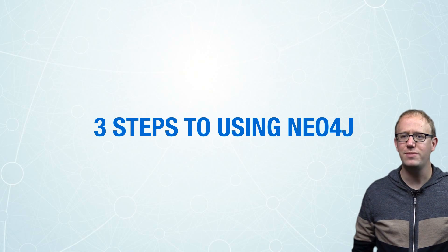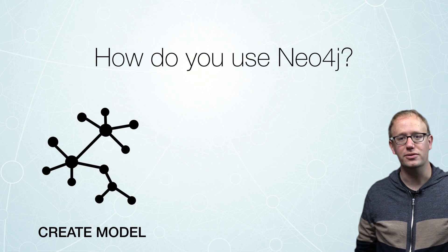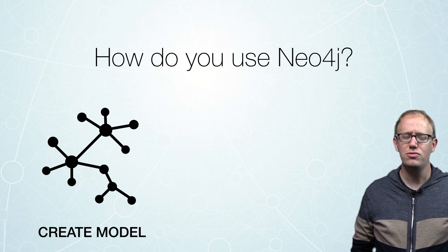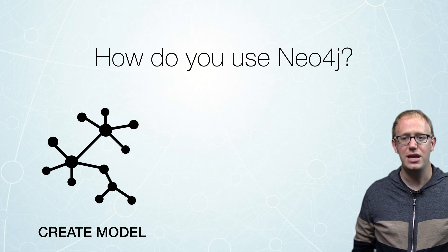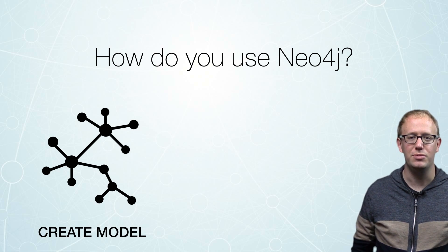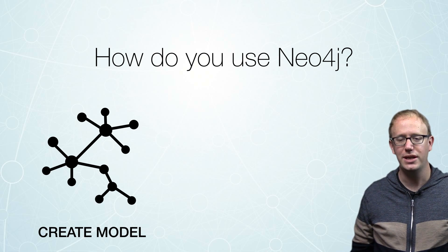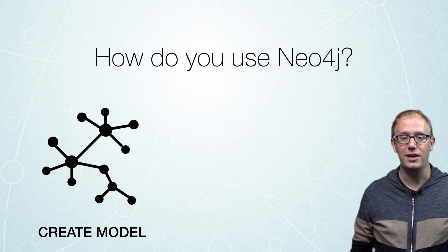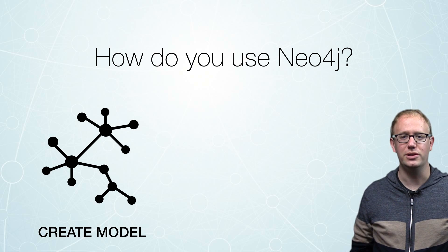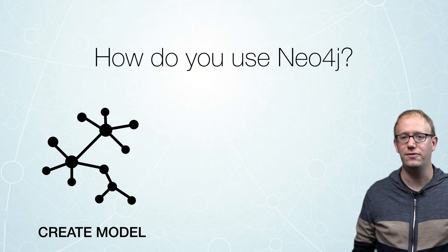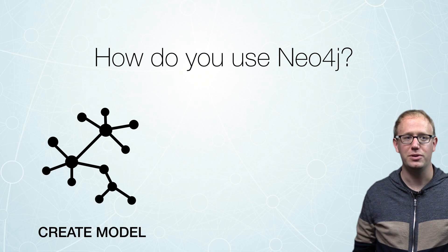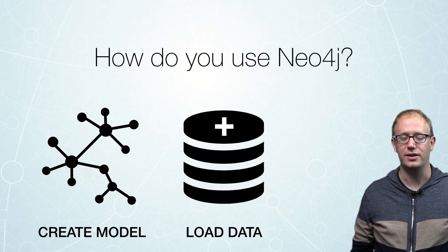Now there are three basic steps to using Neo4j. The first step is creating your model. You create your model in advance — your labels, your nodes, what's going to be your properties, what are going to be your relationships — you create that in advance. Even though Neo4j is schema optional and you can add and remove these things on the fly later, you want to create in advance for your next step, and that is loading your data.